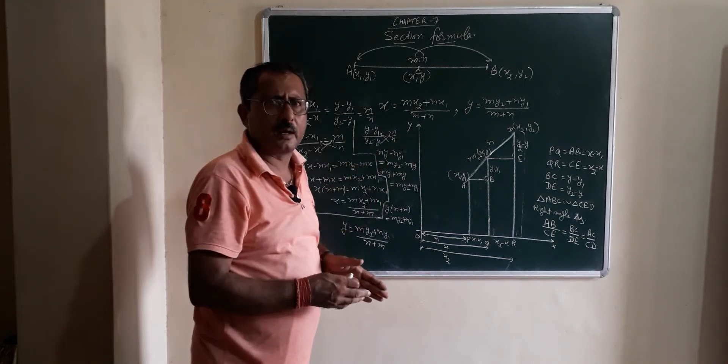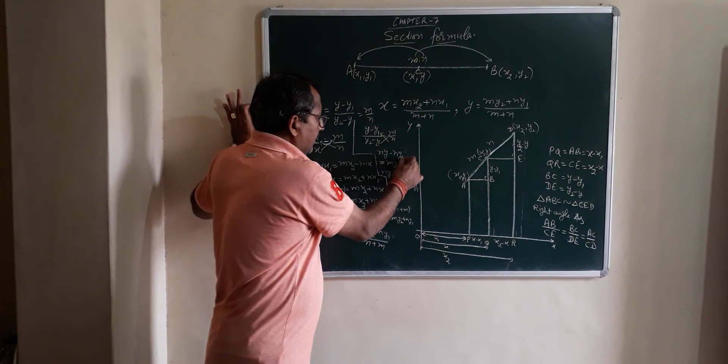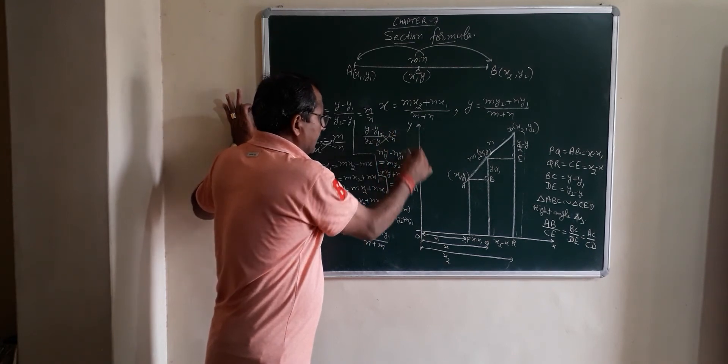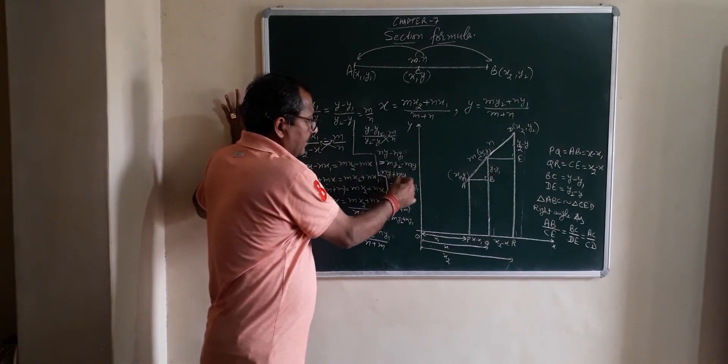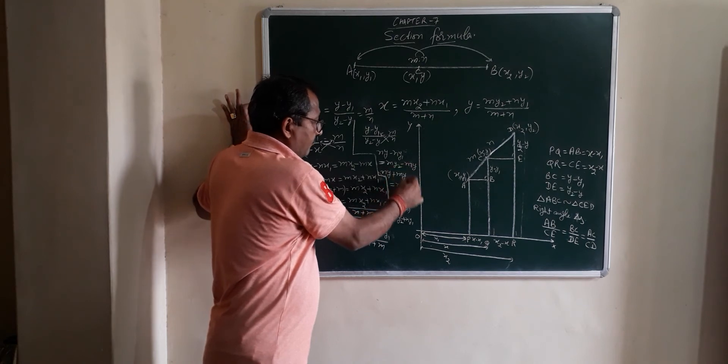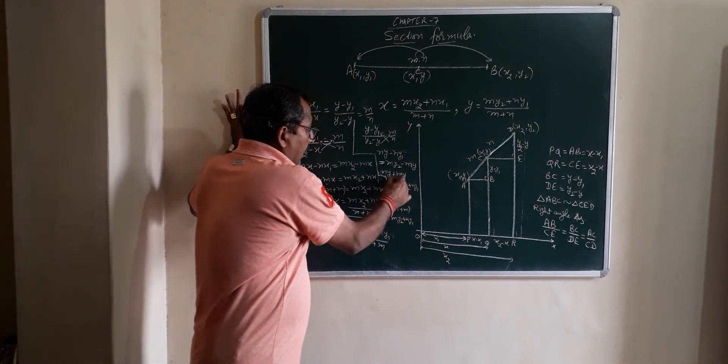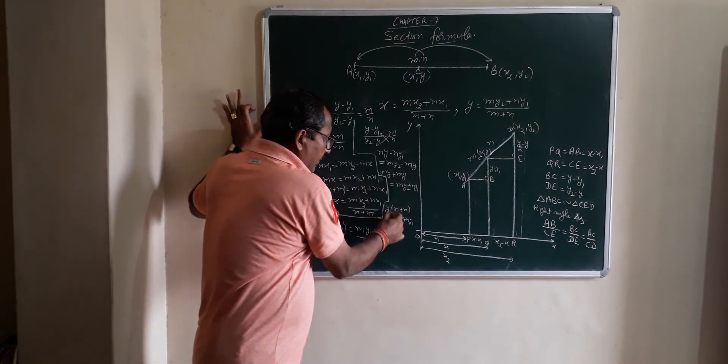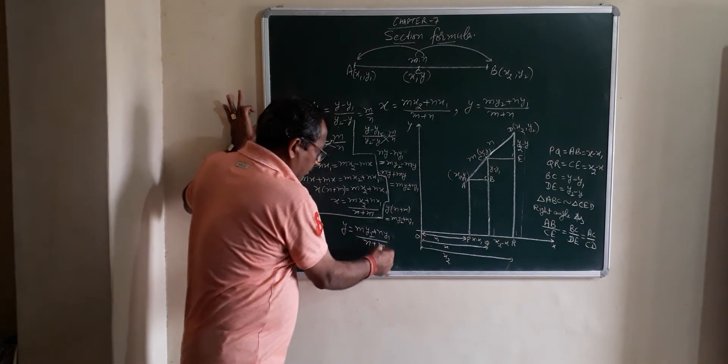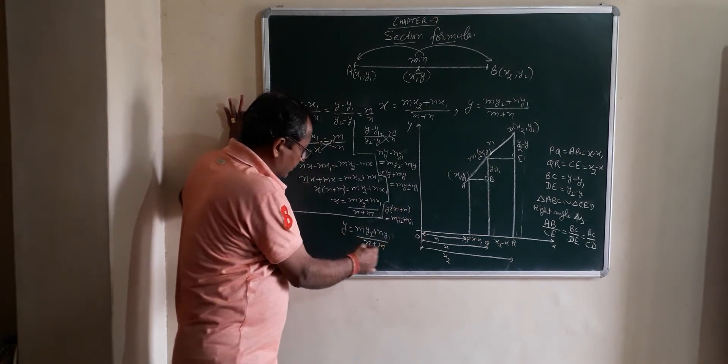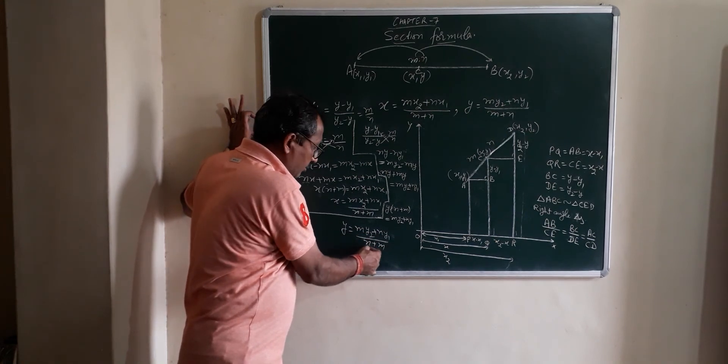Same Y minus Y1 upon Y2 minus Y is equal to M upon N. Cross multiplication, N Y minus N Y1 is equal to M Y2 minus M Y. M Y transpose, N Y transpose. Y common N plus M, M Y2 plus N Y1. Multiple divide. Y is equal to M Y2 plus N Y1 upon sum of their ratio N plus M.